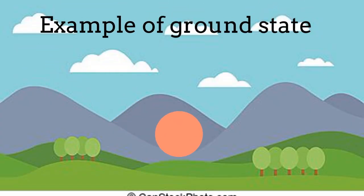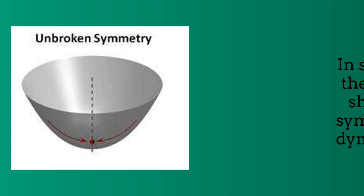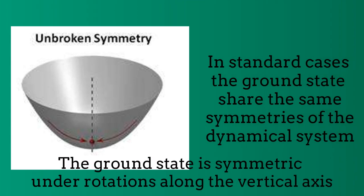One example of a ground state is the valley between two contiguous mountains. If the red ball falls from the top, it will find the equilibrium position at the valley. The ball located at the valley is then the ground state of the system. This is an example of a potential term behavior. The bottom of the potential represents the ground state, which is symmetric under rotations around the vertical axis. The same symmetry is respected by the dynamics of the system, or equivalently respected by the Hamiltonian of the same system.